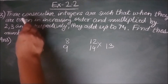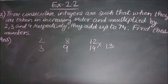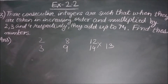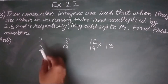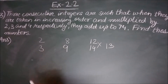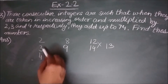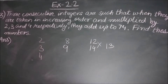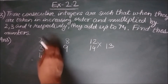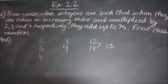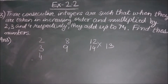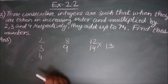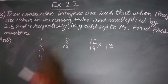Here we are talking about three consecutive integers. So let's take 2 and 3 and add one more integer: 4 comes immediately after 3. So 2, 3 and 4 are three consecutive integers — they come one after another.